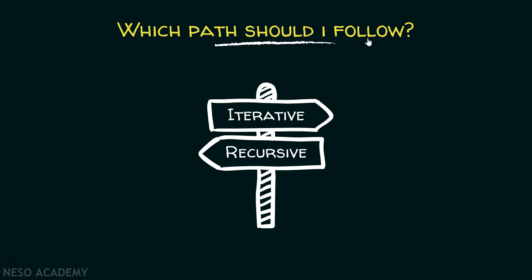Which path should I follow? Should I follow an iterative path or should I follow a recursive path? Every recursive program can be written as an iterative program. This means whatever we can write with recursion, we can also write with iteration. The natural question that arises is: which path should I follow? In order to address this question, we will consider an advantage and a disadvantage of a recursive program over an iterative program, so that we can understand which path we should follow while writing code.